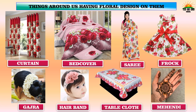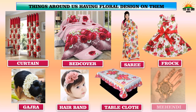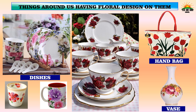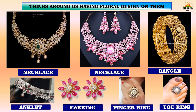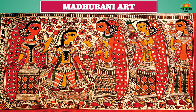Are there any things in your house which have designs of flowers made on them? Yes, there are many things around us with floral designs, like curtains, bedsheets, sarees, frocks, gajra, hairbands, tablecloths, mehendi, crockery, dishes, vases, bags, carpets, floor mats, door mats, wall paintings, and jewelry like necklaces, bangles, anklets, earrings, finger rings, and toe rings.